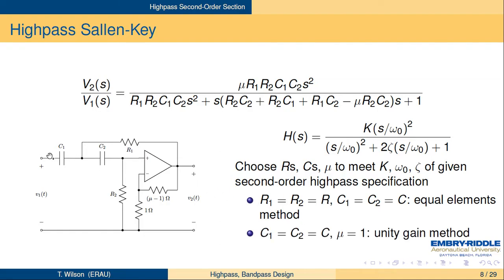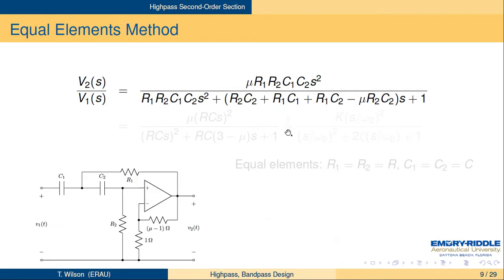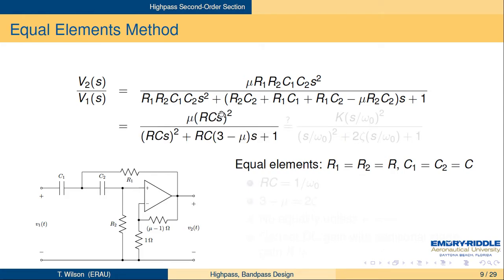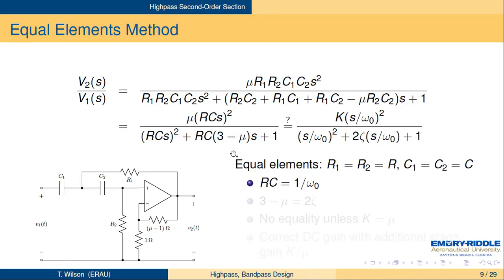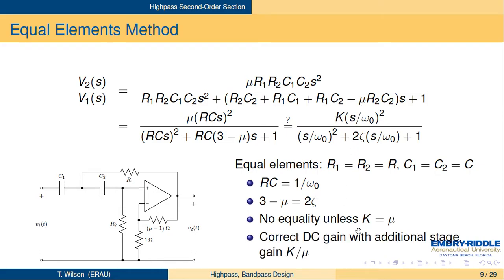The equal elements method has R₁ = R₂ = R and C₁ = C₂ = C. When you plug these in, you get μ(RCS)² over (RCS)² + RC(3 − μ)S + 1. So RC must equal 1/ω₀, and that leaves 3 − μ = 2ζ. Since the gain μ won't likely equal the required value, you'll need an additional high-frequency gain stage to fix up the gain.